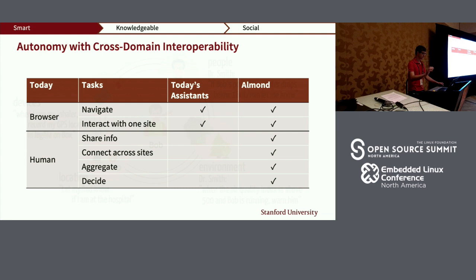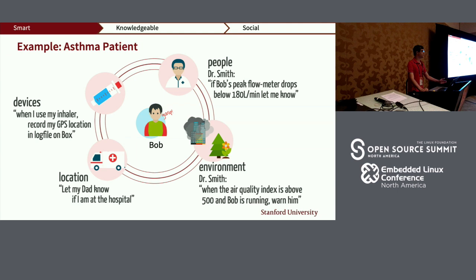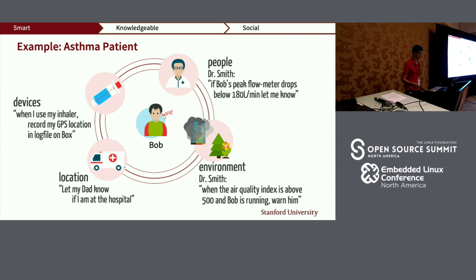Here's an example of what it means to share information, aggregate, and decide — in the context of Bob, an asthma patient. Bob can use his assistant to share his position, for example by letting his dad know if he's in the hospital. He can connect his inhaler with his GPS location and file storage service, aggregate information such as the air quality index and the fact that Bob is running, and even decide when the doctor should be informed by a critical condition in Bob's readings.